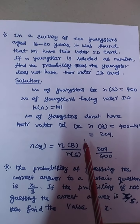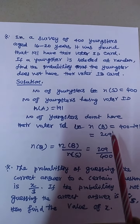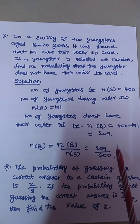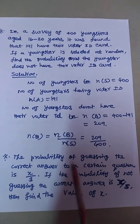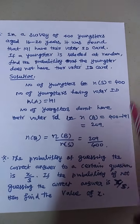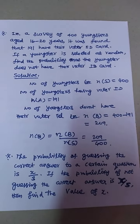P of B equals N of B divided by N of S equals 209 divided by 400. This is the probability of not having the voter ID card.